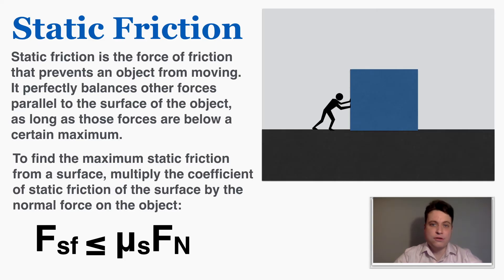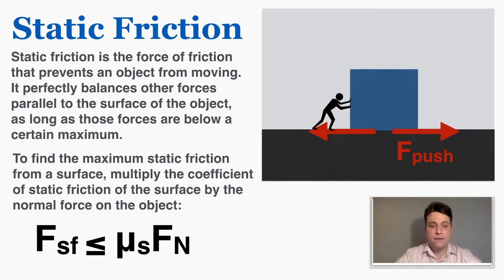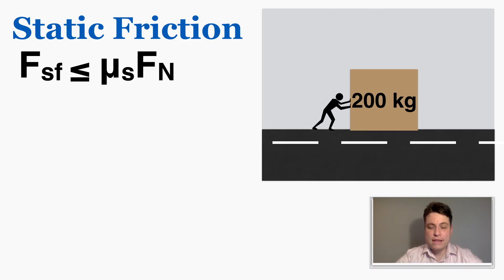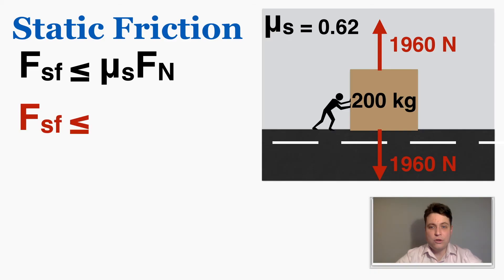There are two types of friction. The first is static friction — the force of friction that prevents an object from moving. It perfectly balances other forces parallel to the surface as long as those forces are below a certain maximum. To find the maximum static friction, you multiply the coefficient of static friction by the normal force. For this box, the downward force of gravity is 1,960 newtons, so the normal force is also 1,960 newtons, and the coefficient of static friction between the box and concrete is 0.62.